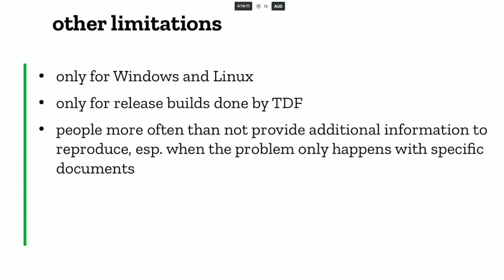Another limitation is that the crash reporting service is only available for Windows and Linux — not macOS. Mac users are a relatively small user base compared to Windows and Linux, so not having macOS support doesn't matter too much, and Windows and Linux crashes alone are enough to deal with. Additionally, it only works when the corresponding debug information is on the server side, which means it's only available for builds done by TDF — specifically Alpha, Beta, and release candidate builds. Tinder boxes and daily builds don't have this integration and don't have crash reporting enabled.